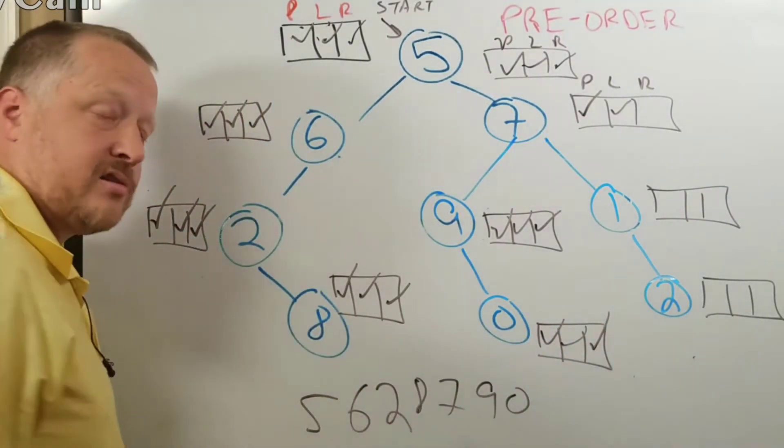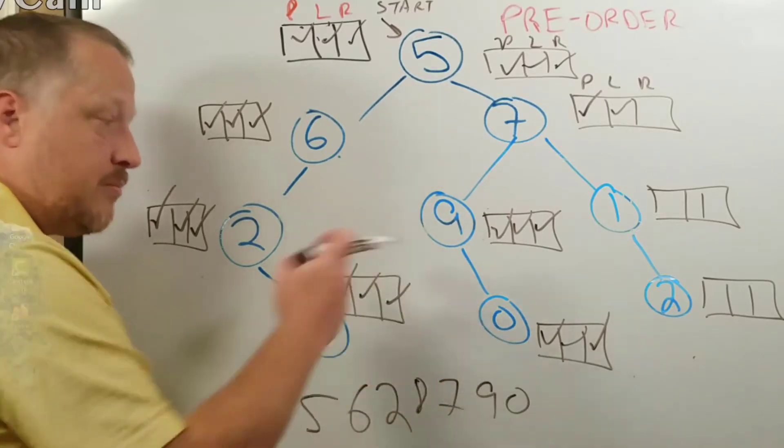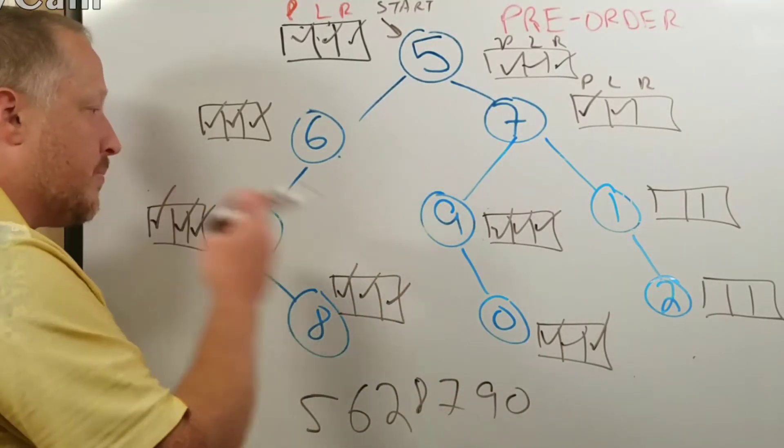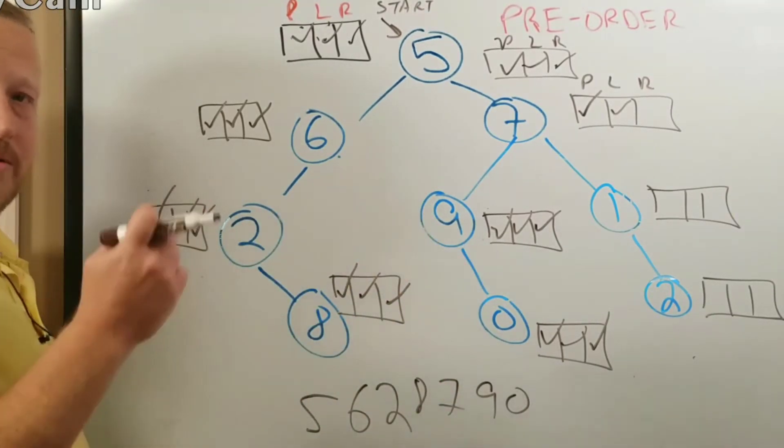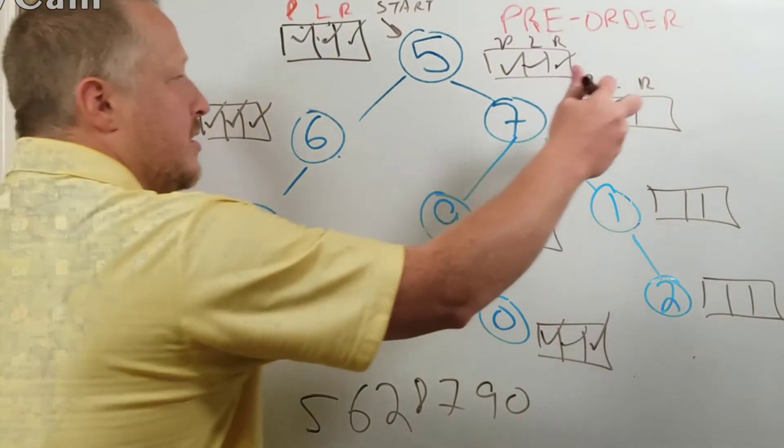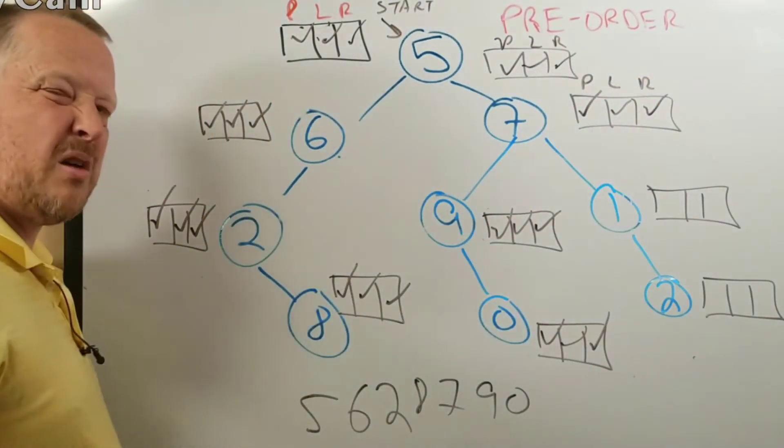I'm going to try to go right. There's nothing there. So now I'm done with zero. Go back up to nine. Nine, I'm done with nine. Nothing there. Seven, I've still got a right to go. So I'm not done with seven quite yet.